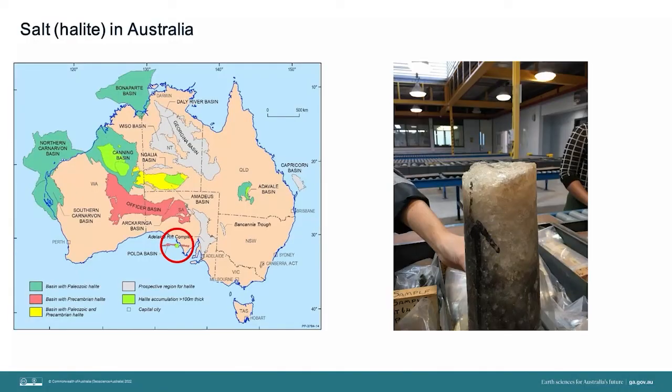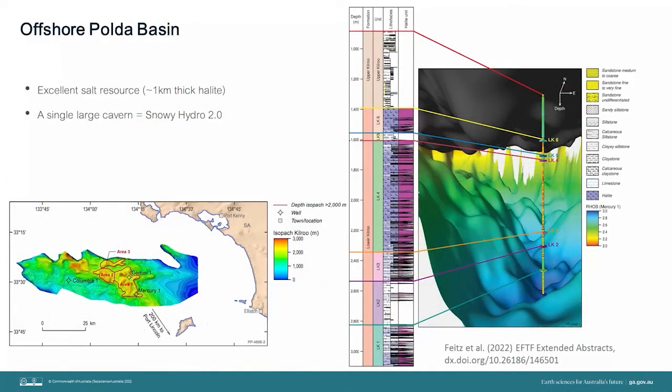Another area of interest is the Polder Basin in South Australia. We have mapped the salt resource in the offshore Polder Basin and undertaken an initial design of a salt cavern. The offshore Polder Basin contains an excellent salt resource, approximately one kilometre thick of almost pure halite. The salt depth is good and is located only 60 kilometres offshore, and within reasonable proximity to the Eyre Peninsula, which is scoped to be a major hydrogen hub. Offshore salt storage hasn't really been considered in Australia to date, but is under active consideration in Europe and the UK. This is potentially a very good option for this part of Australia. A single large salt cavern could provide the same amount of energy as Snowy Hydro 2.0.